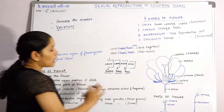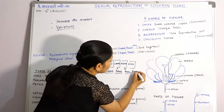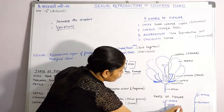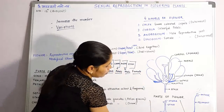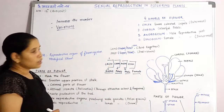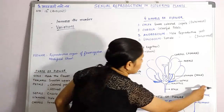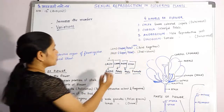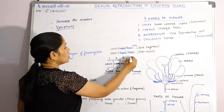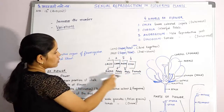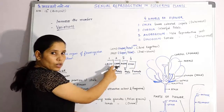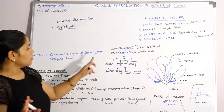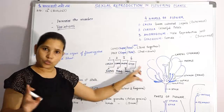So to summarize: the four whorls are — first, calyx; second, corolla; third, androecium; and fourth, gynoecium. Calyx is the outermost and gynoecium is the innermost. Androecium is the male reproductive part and gynoecium is the female reproductive part of any flower.